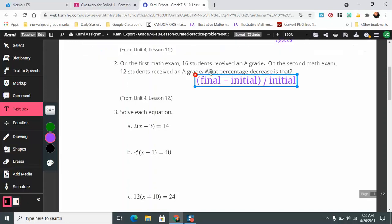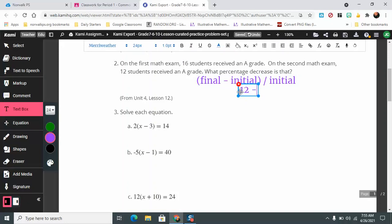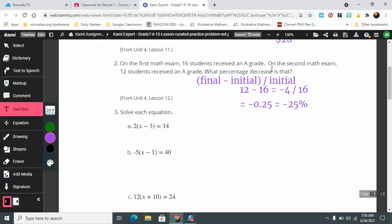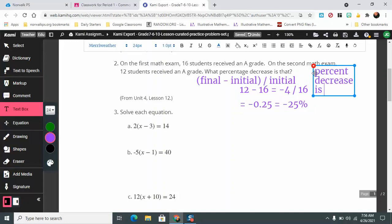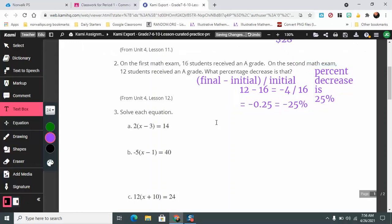That means that we're going to do 12 minus 16, which is going to equal negative 4. And that's going to be then divided by 16, because that's the initial amount. That's going to give us negative 25%, which means a down 25%, and that's a percent decrease. So we would say a percent decrease is 25%.